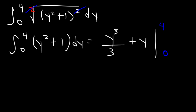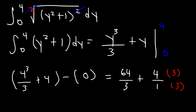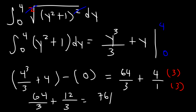Plugging in 4: 4 to the third divided by 3 plus 4. Plugging in 0: 0 cubed plus 0 is just 0. Now 4 to the third is 64, and we write 4 as 4 over 1. Getting common denominators: 4 times 3 is 12, so we have 64 over 3 plus 12 over 3. And 64 plus 12 is 76. So the final answer is 76 divided by 3.